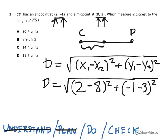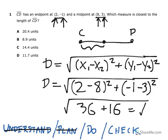For instance, 2 minus 8 is -6. That's the same as 6 squared, which is 36. -1 minus 3 is -4. -4 squared is 16. 36 plus 16 is 52. So I've got the square root of 52. Let me just pause for a minute and grab my calculator.